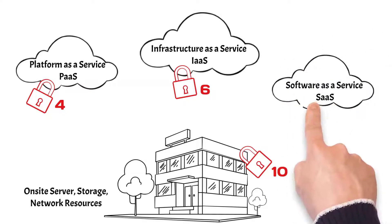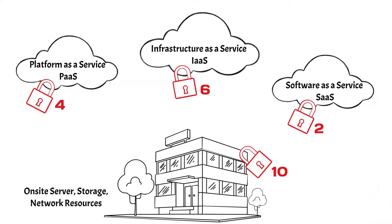Software as a service is typically a service that we purchase. A great example is Netflix — we have a subscription and they serve up movies. Another example may be Amazon, if you're purchasing services from them for shopping. Those are loosely defined, but we'll get into more definitions in just a moment.